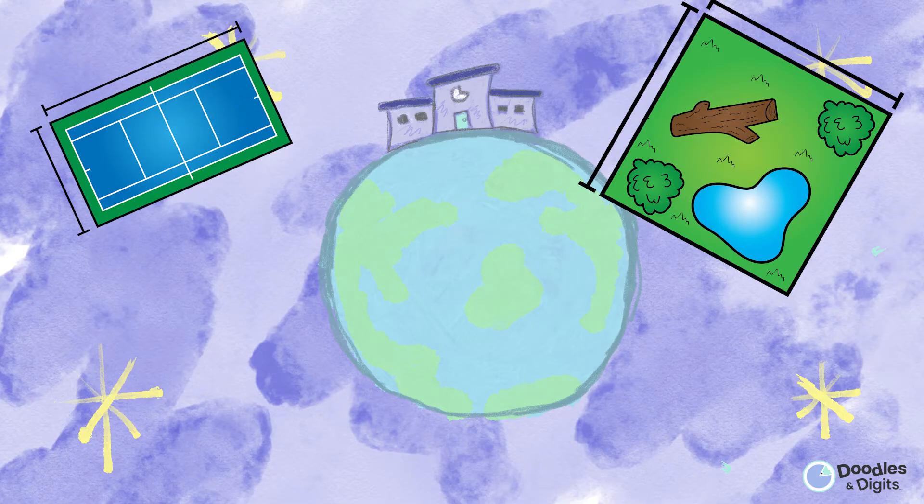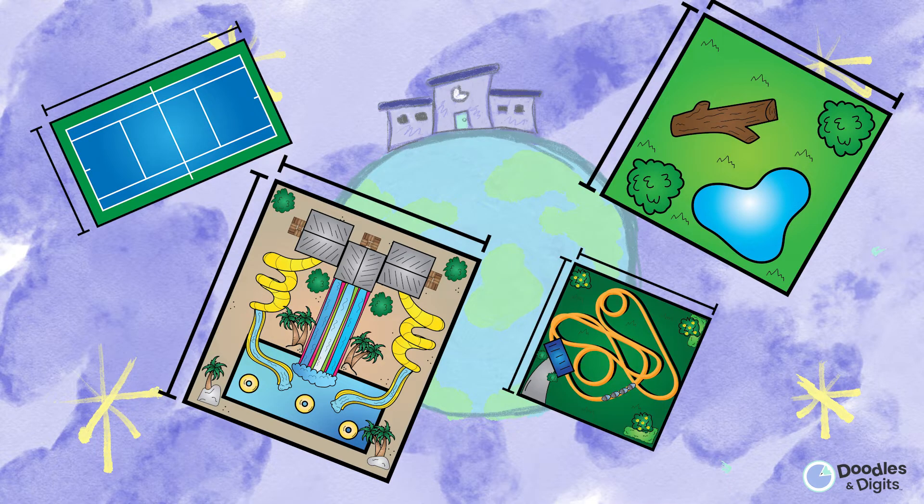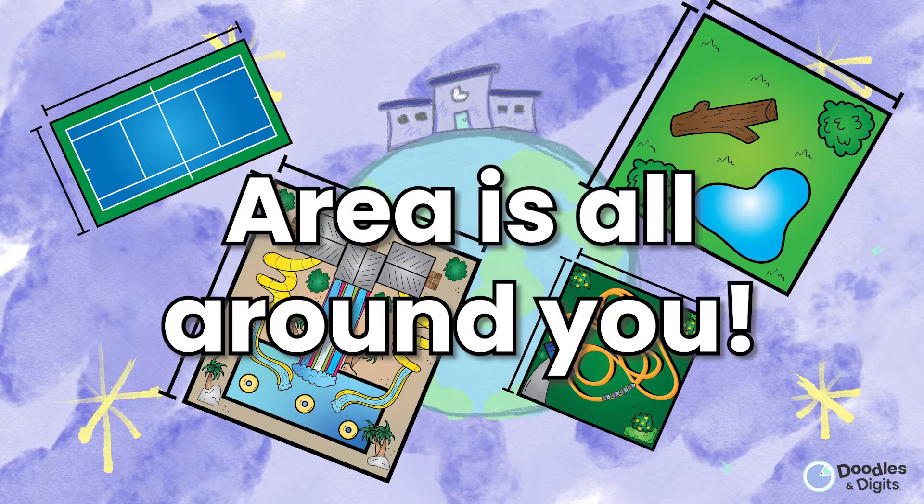For example, an enclosure at a zoo or a sports field you play on. Someone had to think about the area of a water park, and they even had to think about the area of designing a roller coaster. Will this roller coaster fit on this plot of land? Area is all around you. What area is around you right now?